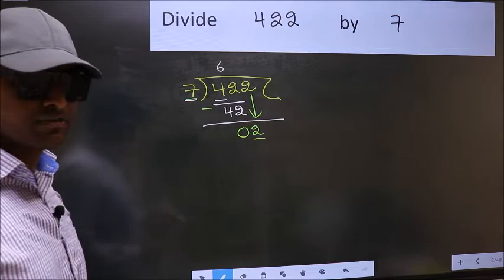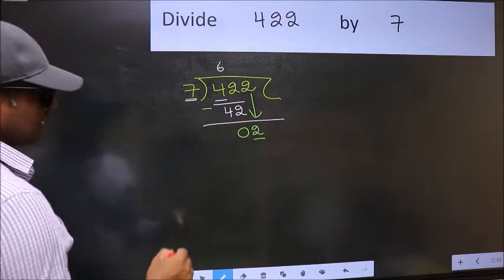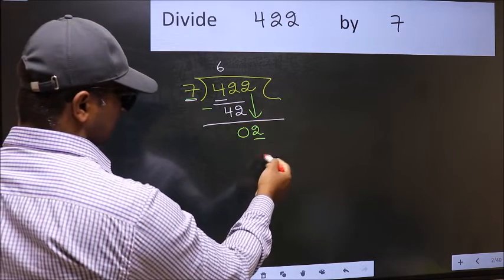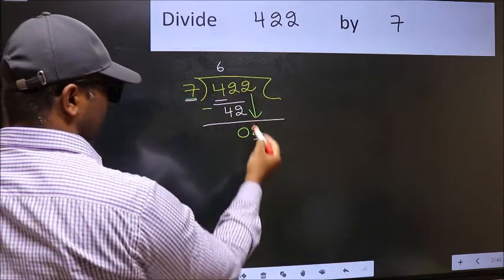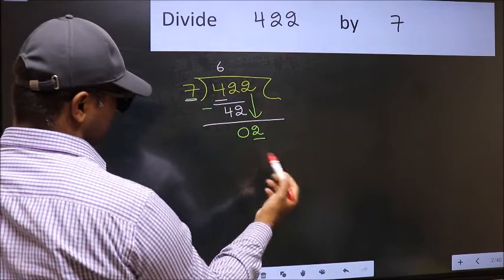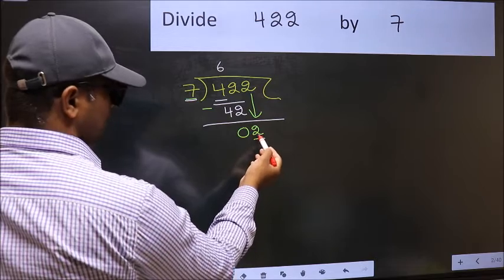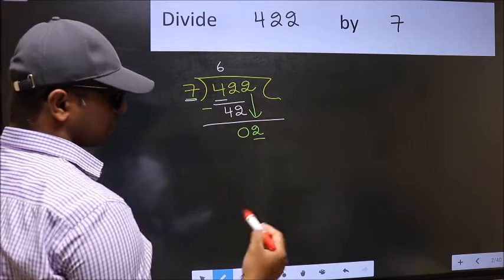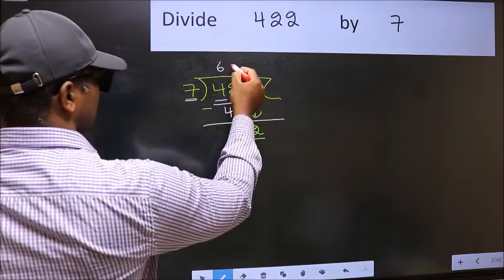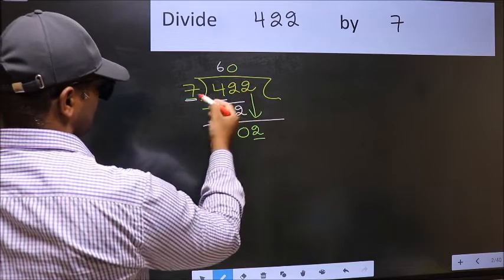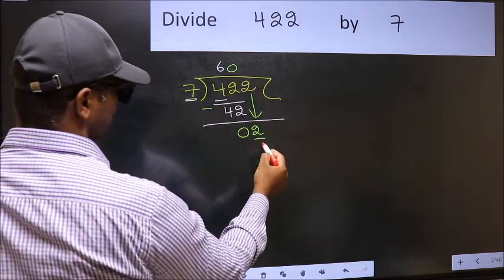If I write 1, we will get 7. But 7 is larger than 2. So what we should do is, we should take 0. So 7 into 0, 0.